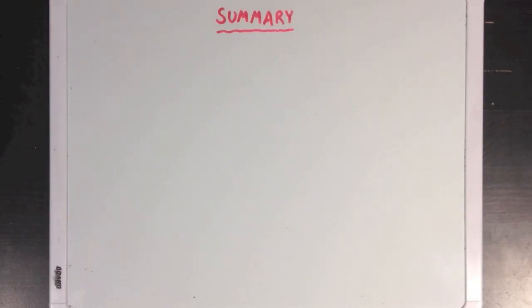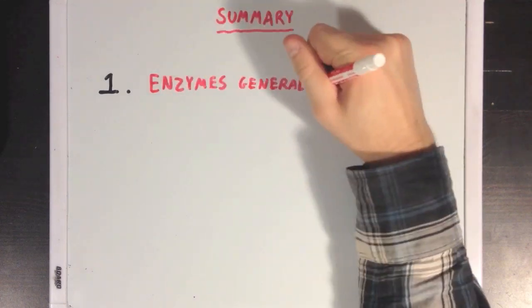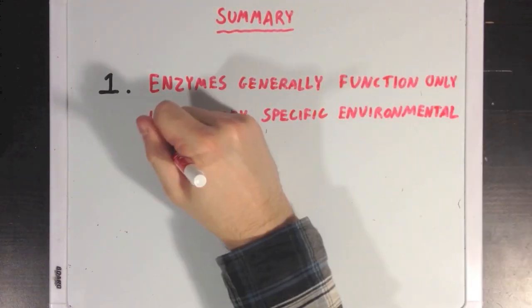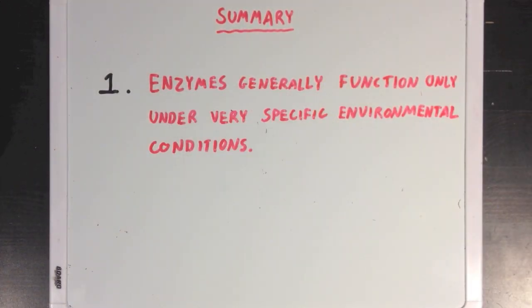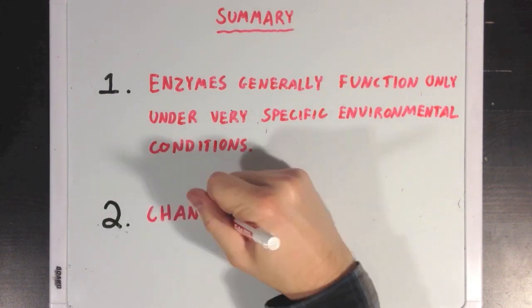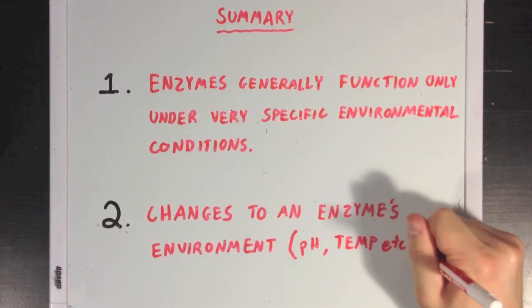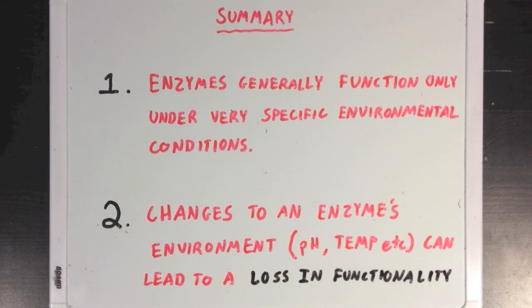So what did we learn? First, we learned that enzymes generally function only under very specific environmental conditions, and different enzymes will often function ideally in different environments from other enzymes. Next, we learned that changes to an enzyme's environment, like changes to the surrounding pH or temperature, can lead to a loss of enzyme functionality.